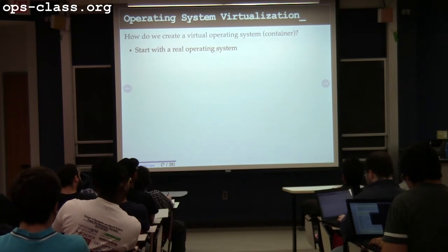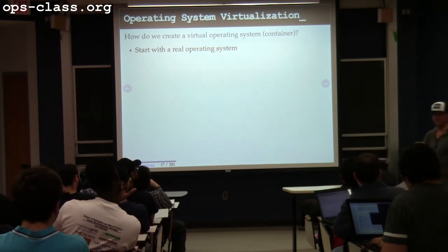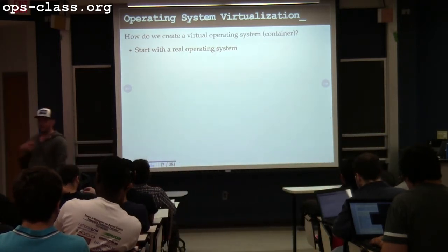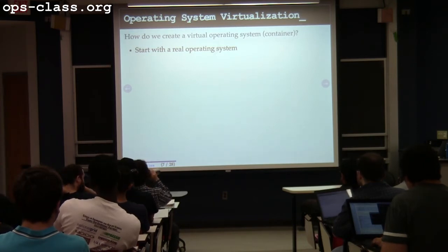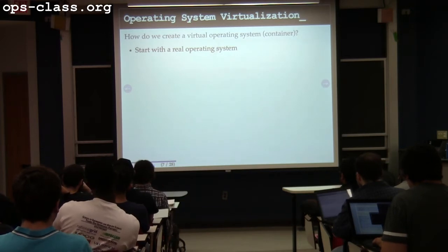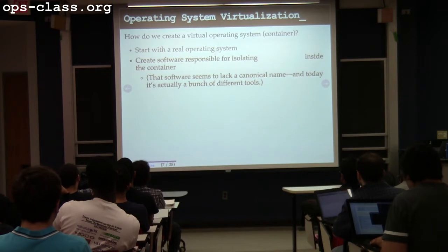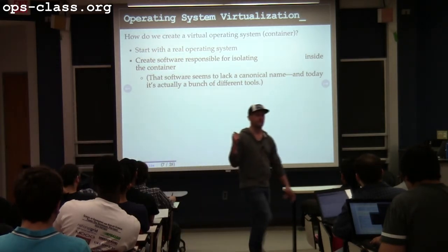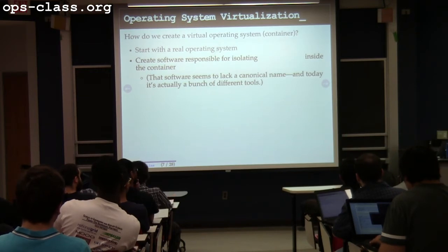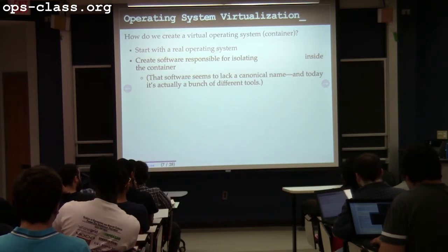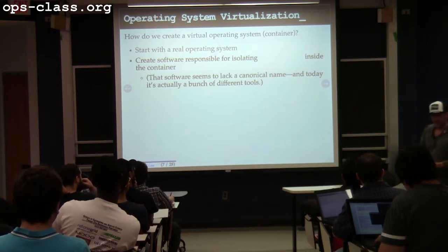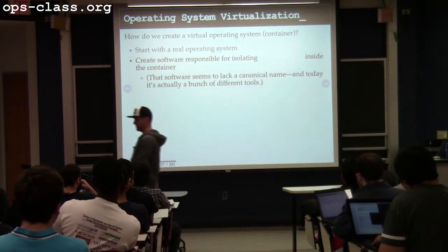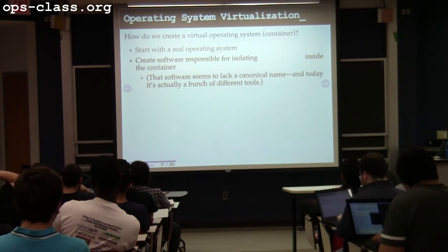This is different from before. Previously, a piece of software was required to provide this interface, and a lot of features were provided by the hardware. In this case, the functionality I want to virtualize is provided by some operating system already running on the machine. Now I have software responsible for isolation. Before, we isolated the guest operating system and all the software that ran inside the virtual machine. What do I isolate in a container? If the container and the rest of the system share a common operating system, what gets isolated inside the container?